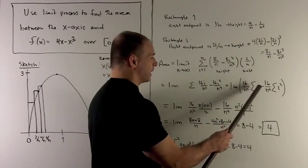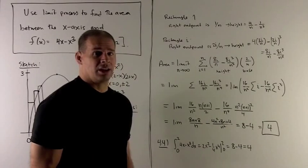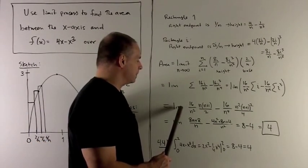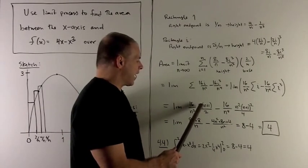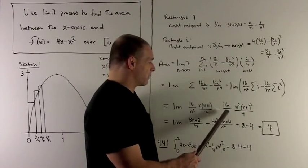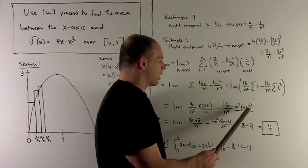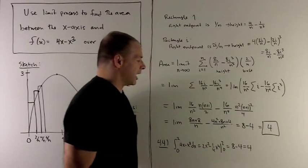For both of these, summation i, summation i cubed, as i goes from 1 to n, we can look that up in a table, and what we wind up with is the limit as n goes to infinity, 16/n squared, summation of i goes to n(n+1)/2, minus 16 over n to the fourth, n squared, (n+1) squared over 4. That's what we get when we look up the summation i cubed.